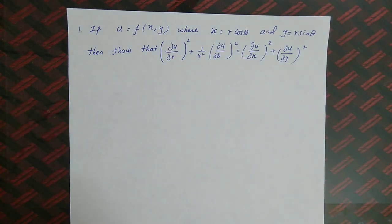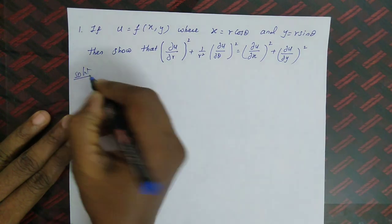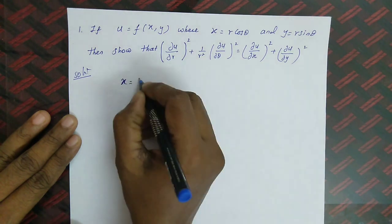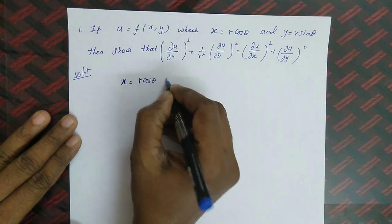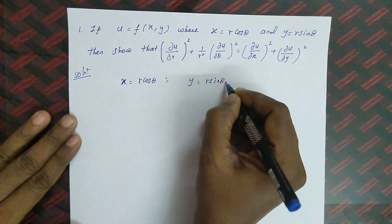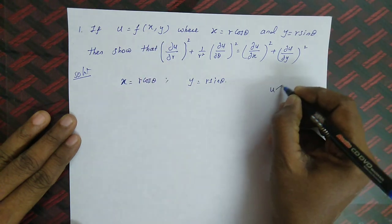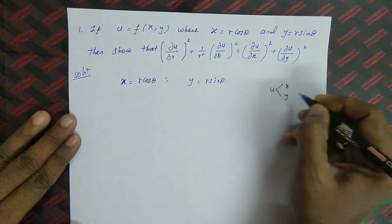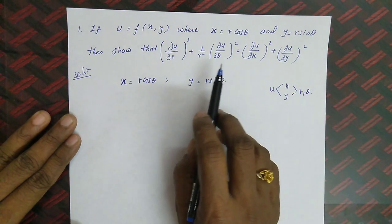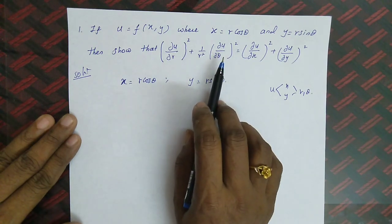Let us look at the solution. Given x equals r cos θ and y equals r sin θ, and u is a function of x and y. Since u is a function of x and y, and x and y are functions of r and θ, we are supposed to find ∂u/∂r and ∂u/∂θ.